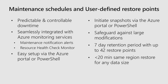Maintenance windows are seamlessly integrated in Azure monitoring services such as resource health check, where you can check the progress of your maintenance within that window. We have maintenance notifications — you'll receive a 24-hour email or alert before a maintenance period begins and when it completes. It's also available to configure in the Azure portal or PowerShell. For user-defined restore points, you can initiate snapshots in the Azure portal or PowerShell. It's a safeguard for OOPS recovery — take it before large modifications to your data warehouse. It supports a seven-day retention period similar to automatic snapshots, and we support 42 user-defined restore points by default.